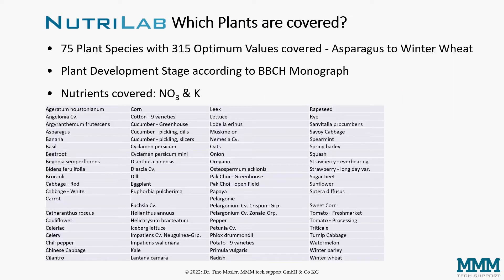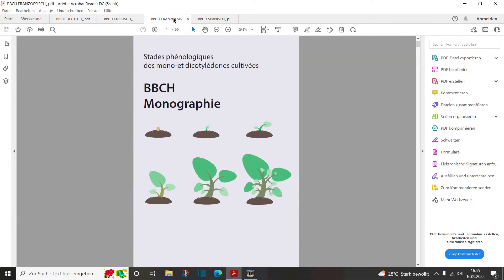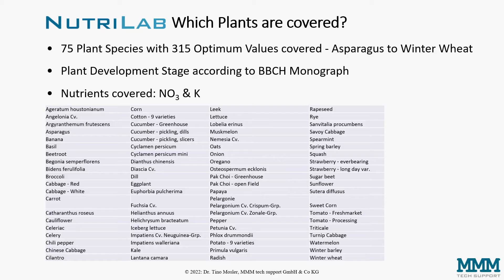Currently we cover 75 plant species with 315 optimum values. That means many species are covered in several development stages with an optimum. The development stage is defined according to the BBCH monograph, which is a free monograph available in English, German, French, and Spanish, and exactly describes the different development stages of the different species.